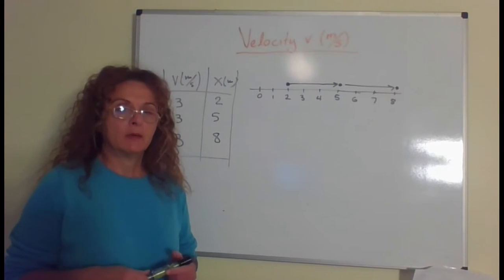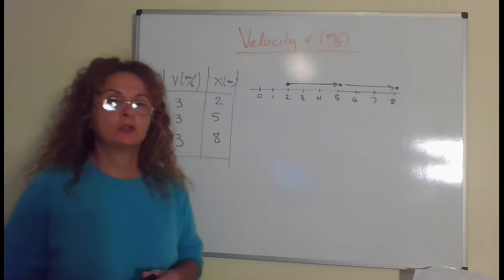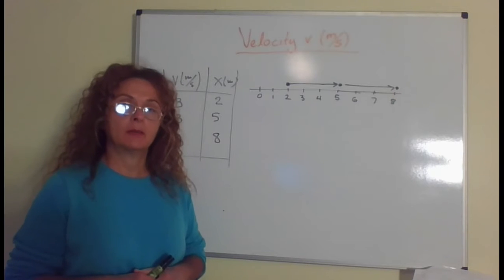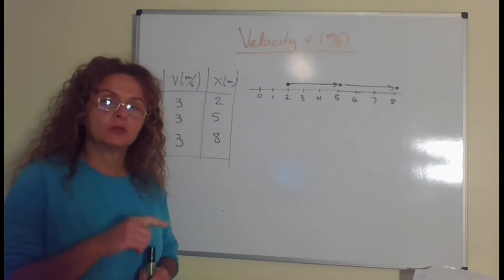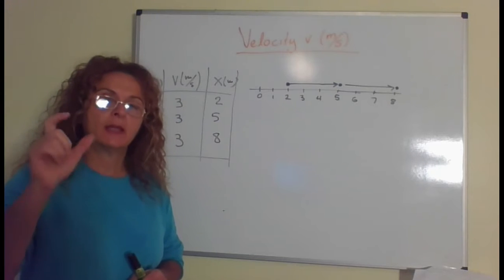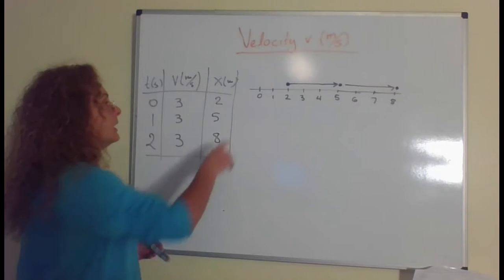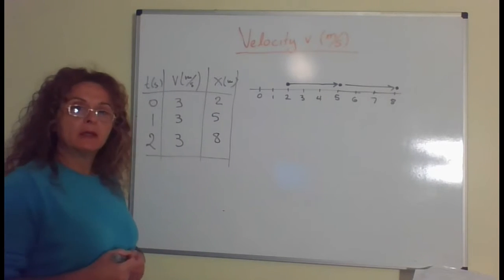In the previous example we saw that velocity shows how position changes with time, and velocity was 3 meters per second because our position changed by 3 meters every second. So I keep the motion diagram here.